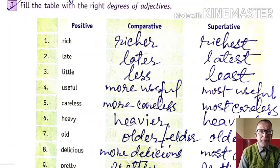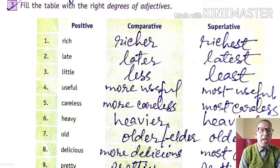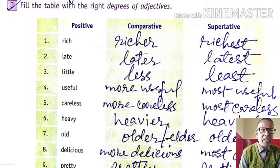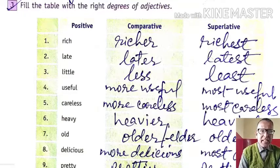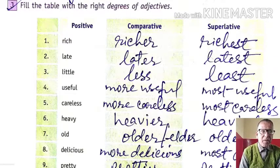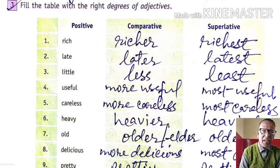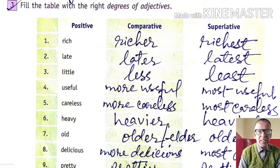Now we will see the degree of comparison of adjectives. Generally, by adding '-er' the positive becomes comparative, and by adding '-est' it becomes superlative. This is the general rule. Sometimes 'more' and 'most' are used. Sometimes it is irregular, like good, better, best.